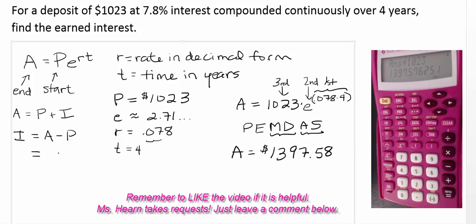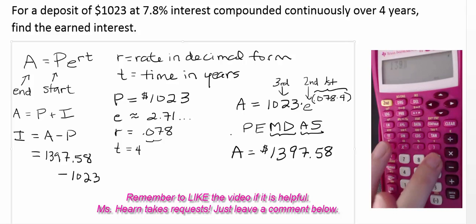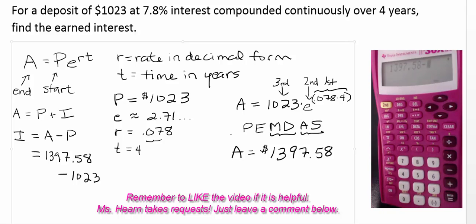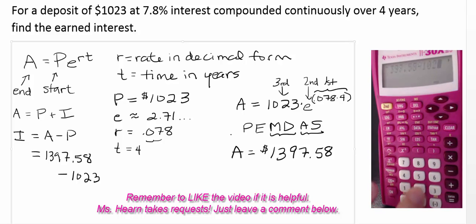So in order to find our answer, we need 1397.58. And we need to subtract from that what we started with, which was 1,023. So 1397.58 minus 1,023 gives us $374.58. So our earned interest is $374.58.